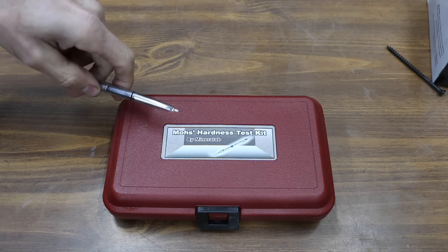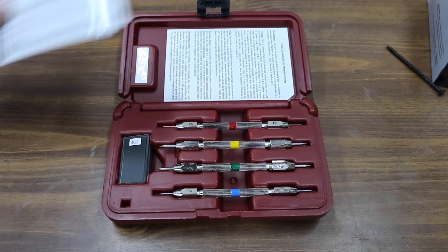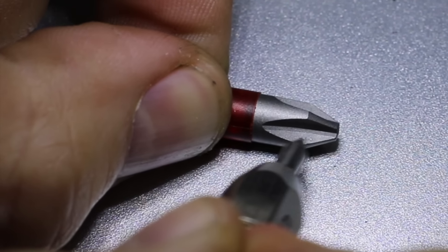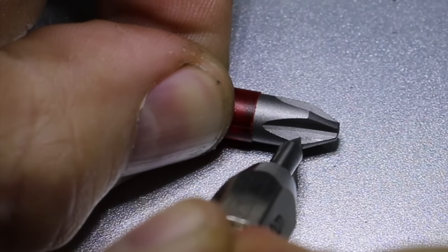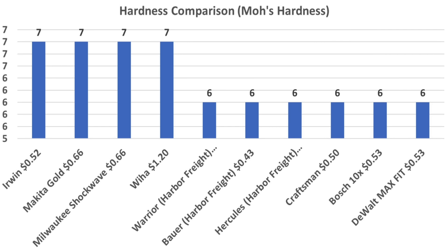Mohs hardness test is definitely not the gold standard for determining metal hardness, but it'll provide us with some great information on whether or not the tip hardness has any impact on durability. The Irwin, Makita, Milwaukee, and Weha all seem to be around a 7 in hardness compared to a 6 for the other brands. It'll be interesting to see if the harder bits show less wear and more strength.